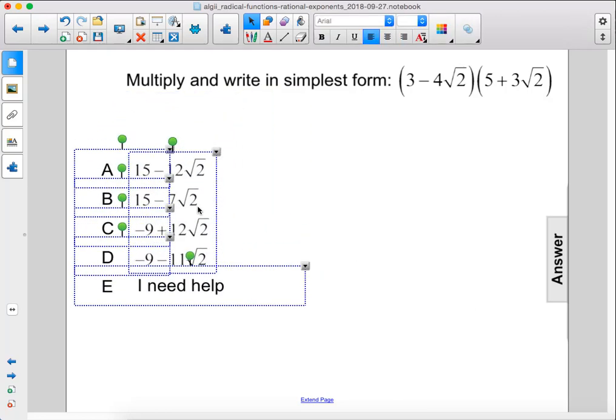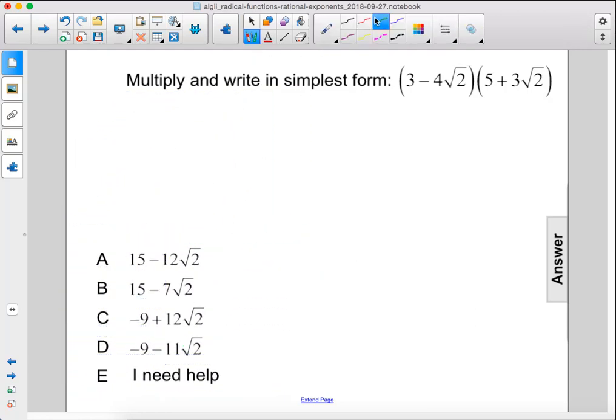Multiply and write in simplest form. So 3 times 5 is 15, then 3 times 3 times the square root of 2 gives us 9 times the square root of 2.